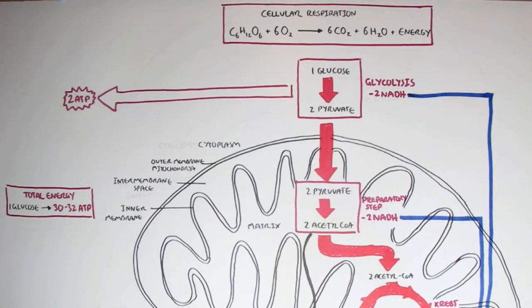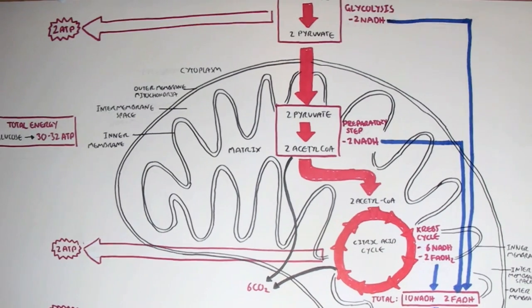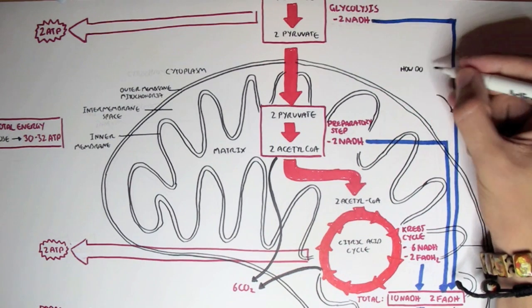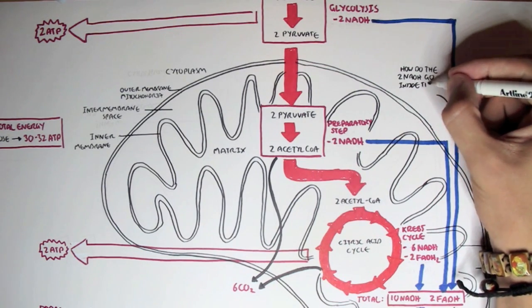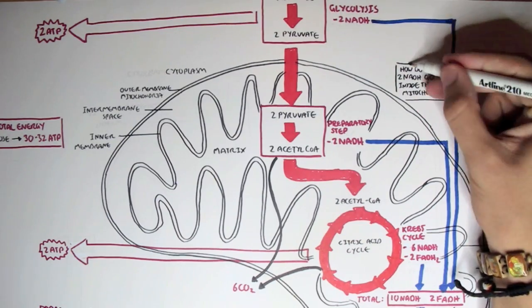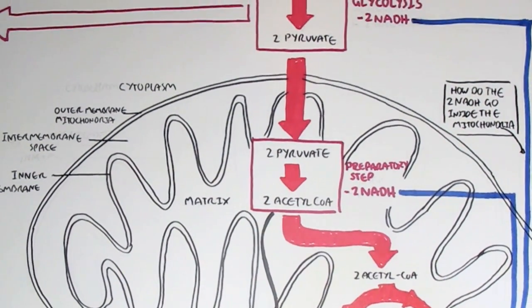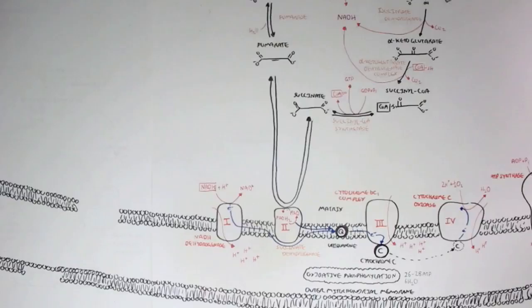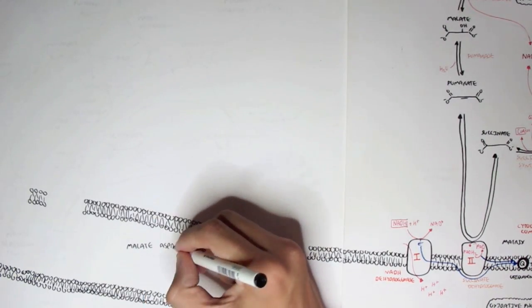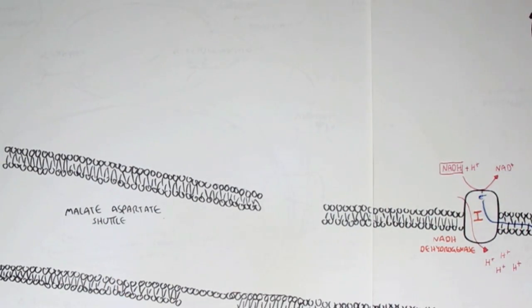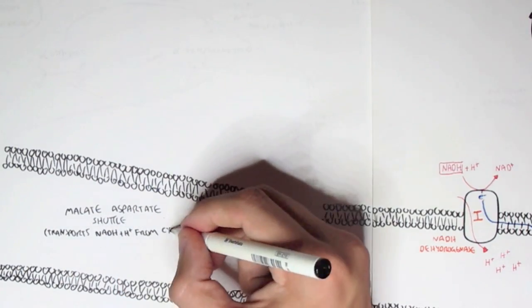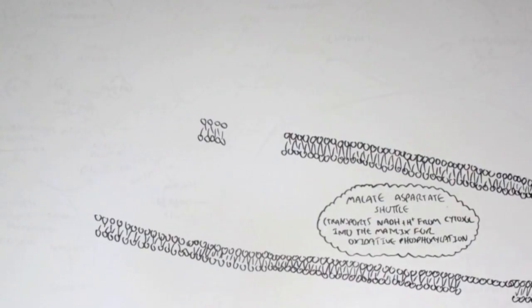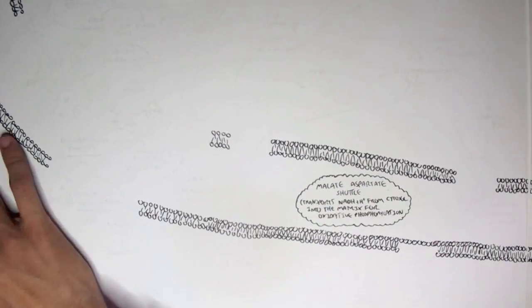Now in this video, we're going to look at nicotinamide adenine dinucleotide, specifically the two NADHs from glycolysis, which are in the cytoplasm. We want to see how these two NADHs enter the mitochondrial matrix, because NADH is required for oxidative phosphorylation in complex 1. The two mechanisms that can transport NADH from the cytoplasm into the mitochondria are the malate-aspartate shuttle and the glycerol 3-phosphate shuttle.